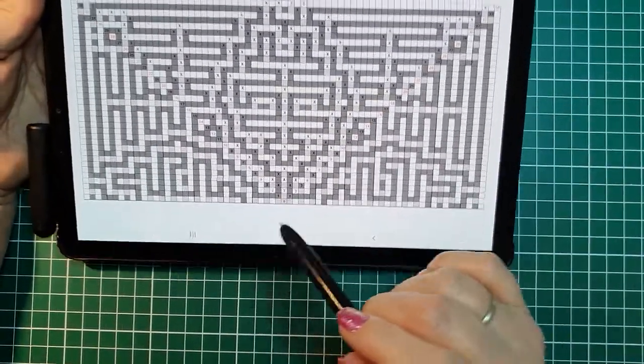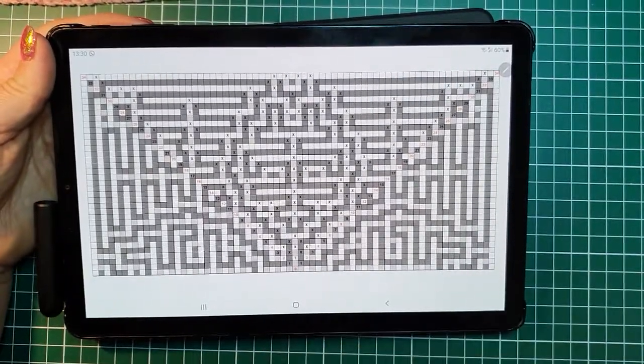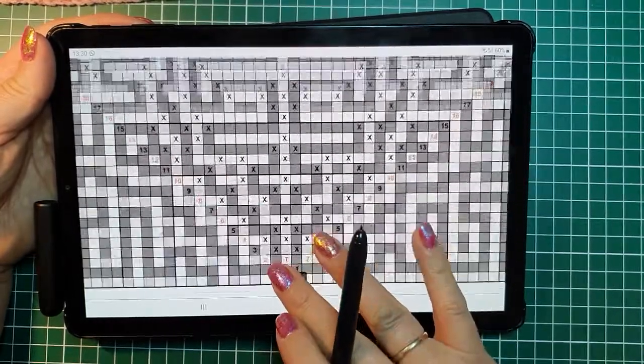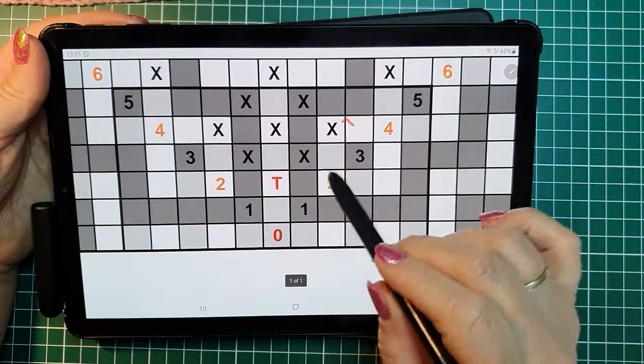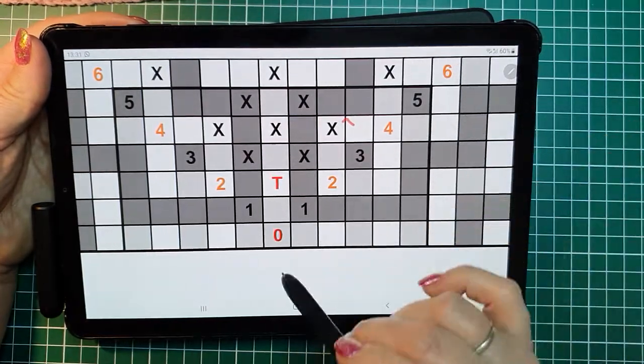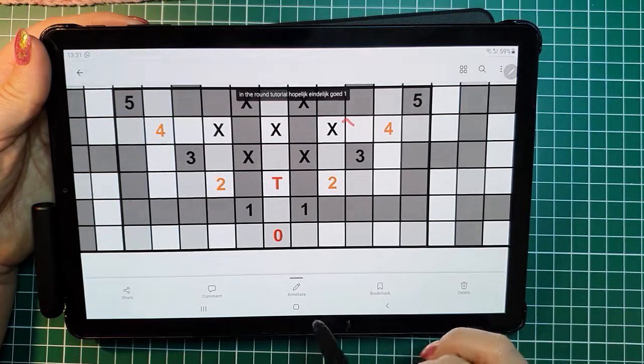You see my different colors in the number. A number is a round. I will zoom in a little bit. And if you see, these numbers have different colors. Let me explain this to you.